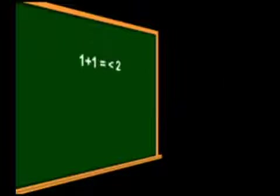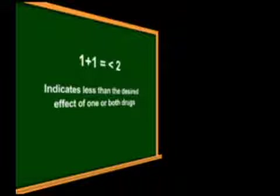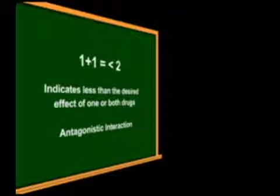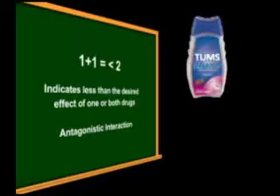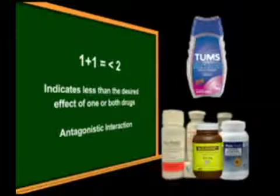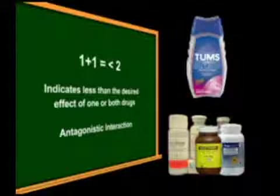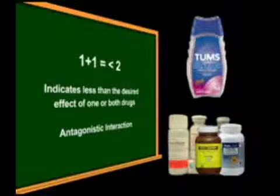When 1 plus 1 equals a value less than 2, this indicates that there is less than the desired effect of one or both drugs. This is called an antagonistic interaction. Antacids, for example, have the ability to reduce the effects of a number of drugs, including some antibiotics and thyroid replacement hormones.